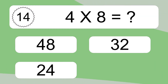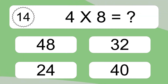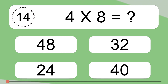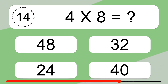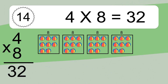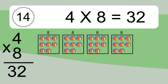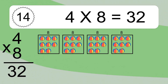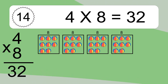4 times 8 equals what? 4 times 8 equals 32. We have 4 boxes, and each box has 8 colorful balls inside. If you count all the balls in all the boxes together, you will have 4 times 8 balls. This equals 32 balls.